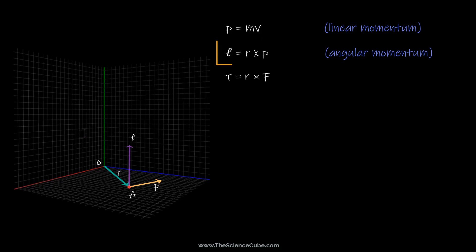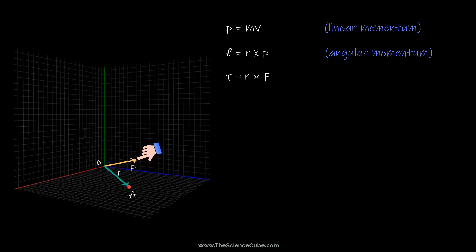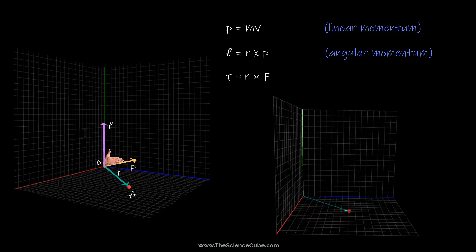Whenever we have a cross product defining a quantity, we have to define the direction of that quantity as well. To find the direction of the angular momentum vector L, we use the right-hand rule: slide vector p to the origin without changing its direction, then sweep the palm of the right hand from r towards vector p — the thumb then gives the direction of L, which here is in the positive direction of the z-axis. This is consistent with the position vector r moving in the counterclockwise direction, which we assign a positive sign; if it were moving clockwise, L would be negative.